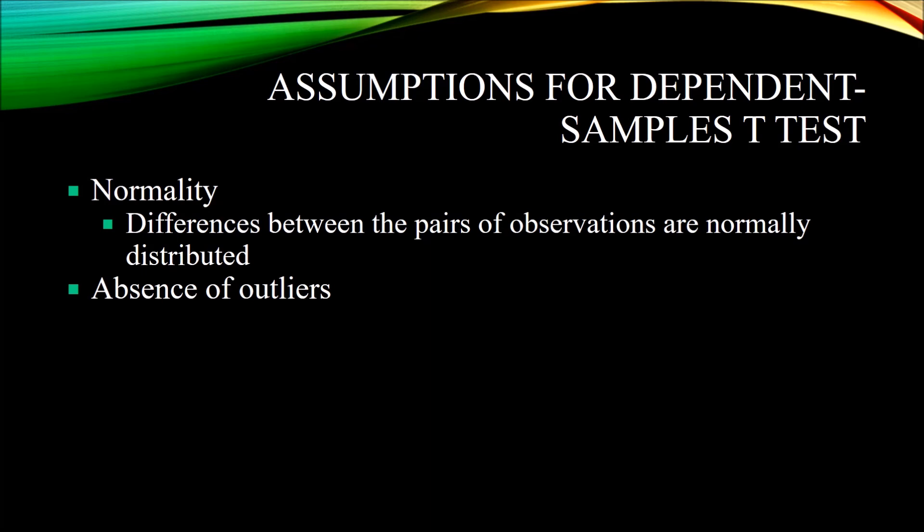To determine if that variable is normally distributed, you could use a variety of methods. One could be the Shapiro-Wilk test, which is a test of normality. You could also look at the skewness or examine a histogram. Typically, to determine if you have normality, you're going to apply a few different methods.